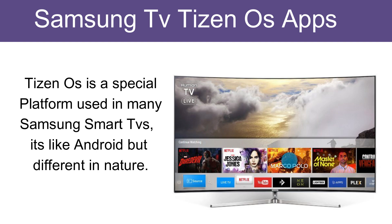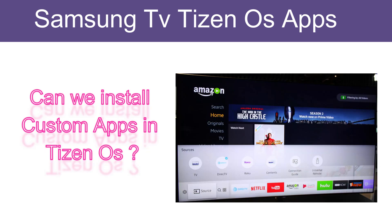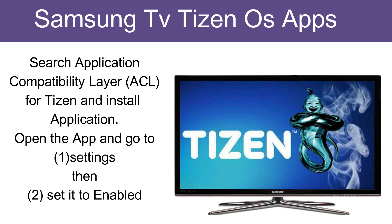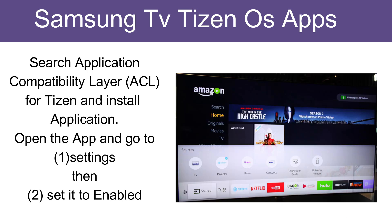It's like Android but different in nature. So the next question is: can we install custom apps or third-party apps in Tizen OS? The answer is yes. We can download Android-based apps in Samsung Tizen by using the Application Compatibility Layer, ACL. Search 'Application Compatibility Layer ACL' for Tizen and install the application. Open the app and go to settings, then set it to enable. That's how you can install apps in Tizen Samsung Smart TV.